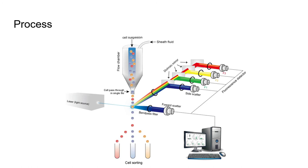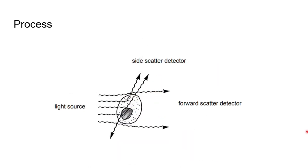The way this works is cells pass through a tube one cell at a time. As the cells pass in front of the laser light, the light source is eclipsed, and the amount of light blocked is read by the forward detector as the cell size. Also, as light passes through the cell, it becomes scattered away from the midline — the more contents within a cell cytoplasm, the more scatter that results. This is read by the side detectors as complexity of the cell.